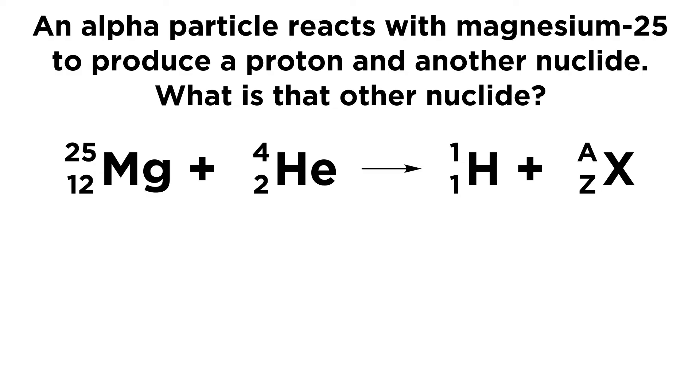Now we know that is going to react with an alpha particle. So what is an alpha particle? We have to know that an alpha particle is a helium nucleus. So we can write helium, we can write He,